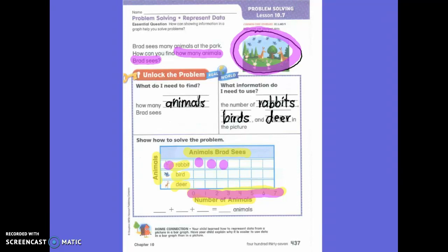But that isn't counting all of the animals. So I want to add them together. How many rabbits did he see? Three. So I want you to write three in another sentence. How many birds did he see? Six. So I want you to write that in the number of sentences.